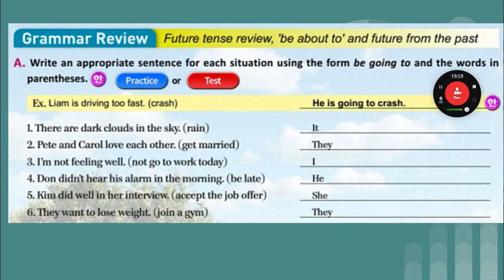Kim did well in her interview — she is going to accept the job offer. They want to lose weight — they are going to join a gym. Now on the top of page 35: rewrite the sentences with 'It is.' For example: 'To have a backup plan is important' becomes 'It is important to have a backup plan.' Both sentences mean the same thing — you're just moving them around. 'To earn respect is a great achievement' — 'It is a great achievement to earn respect.' 'To leave without saying goodbye is rude' — 'It is rude to leave without saying goodbye.' 'To have good friends is a blessing' — a blessing is a good thing that makes your life better — 'It is a blessing to have good friends.' 'To worry is natural' — 'It is natural to worry.'